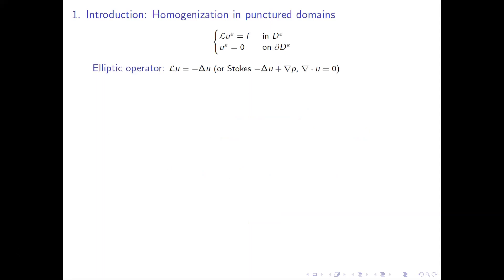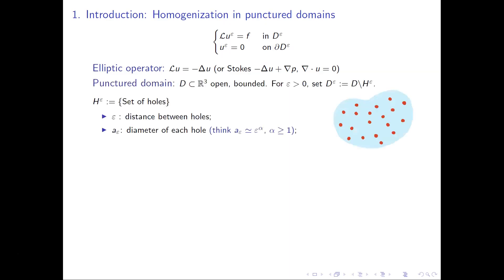We are mainly interested in certain boundary value problems of the form shown on the slide. The operator L will be an elliptic operator — you can think of it as the Laplacian or the Stokes operator. For simplicity, think of it as the Laplacian throughout, and I'll comment when the Stokes case differs. We are solving it in a certain domain called the epsilon-punctured domain, meaning we take an open bounded domain D and remove a collection of holes H_epsilon.